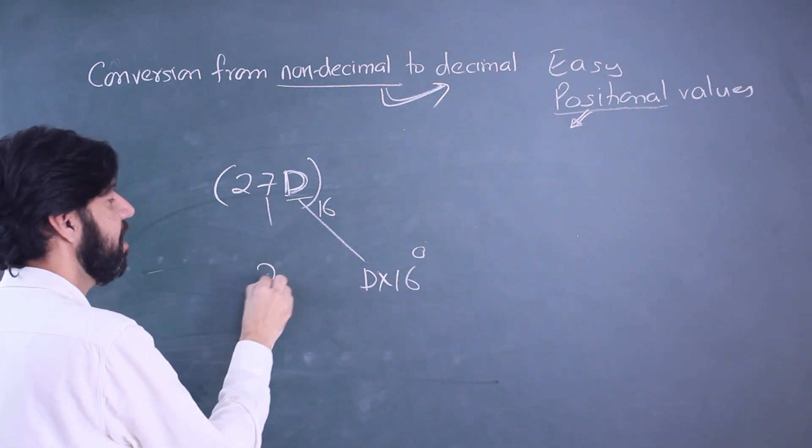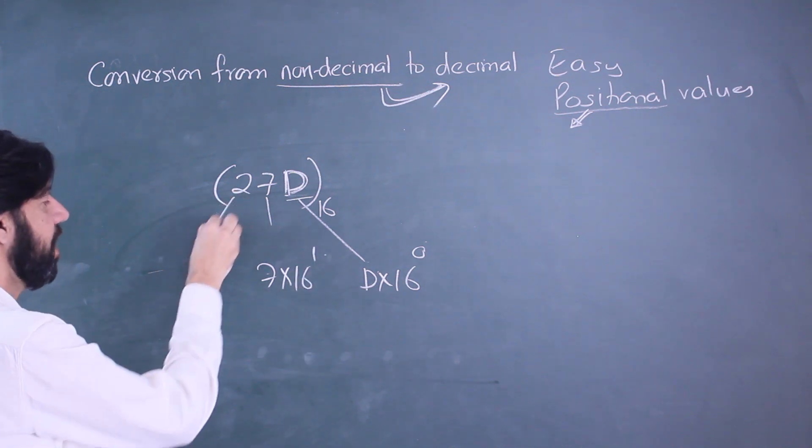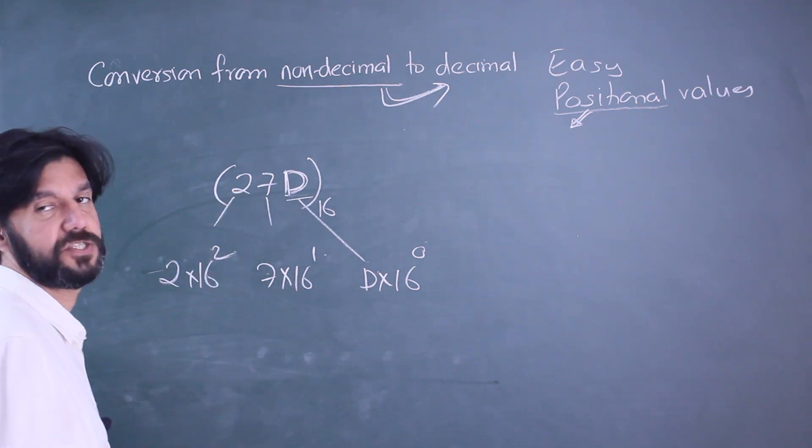The seven has a positional value of 16 raised to 1, and the two has a positional value of 16 square.